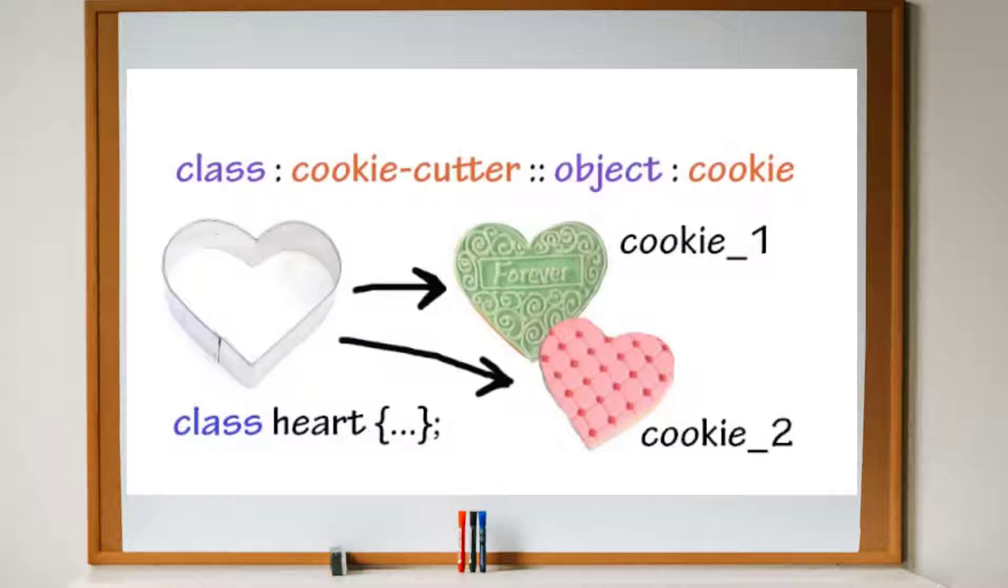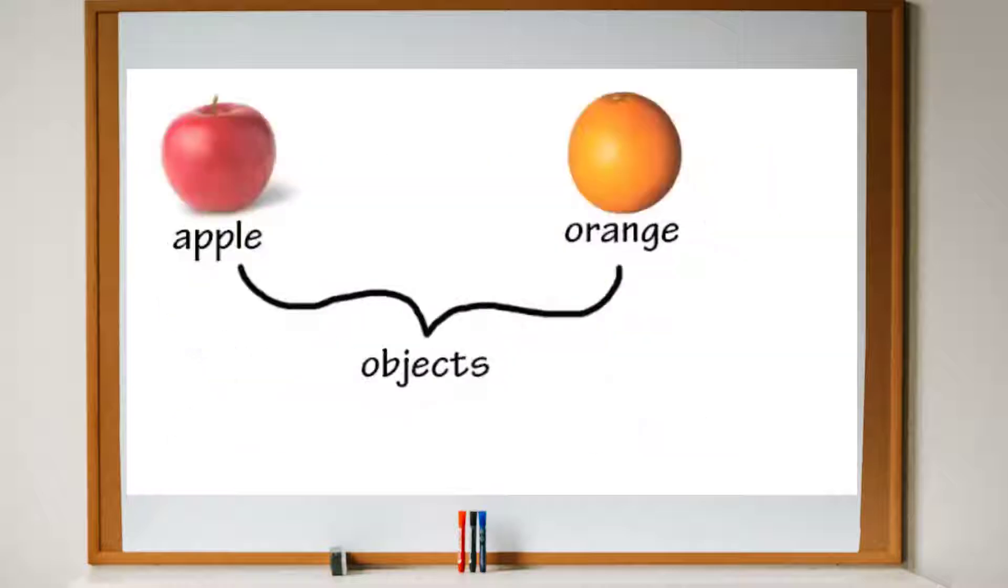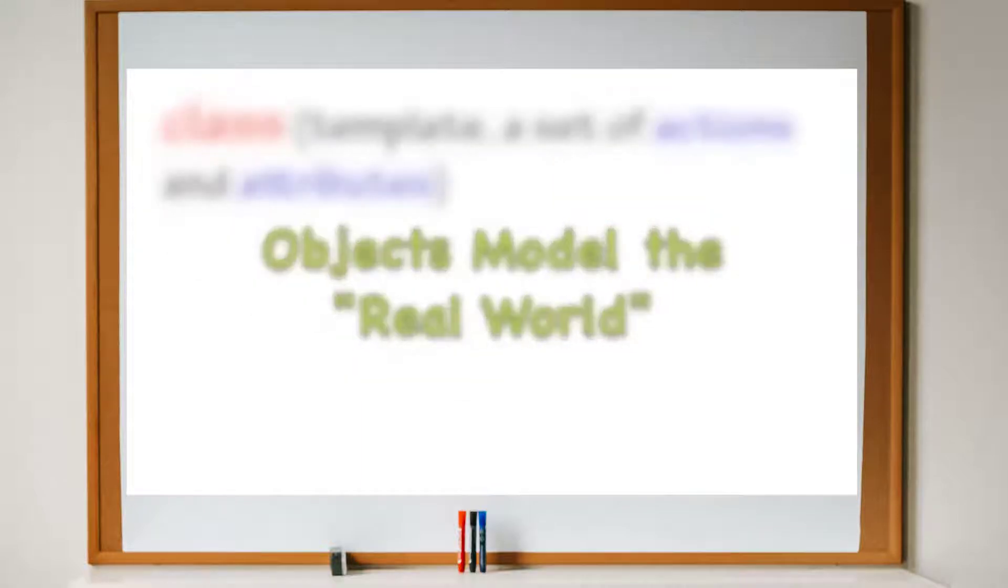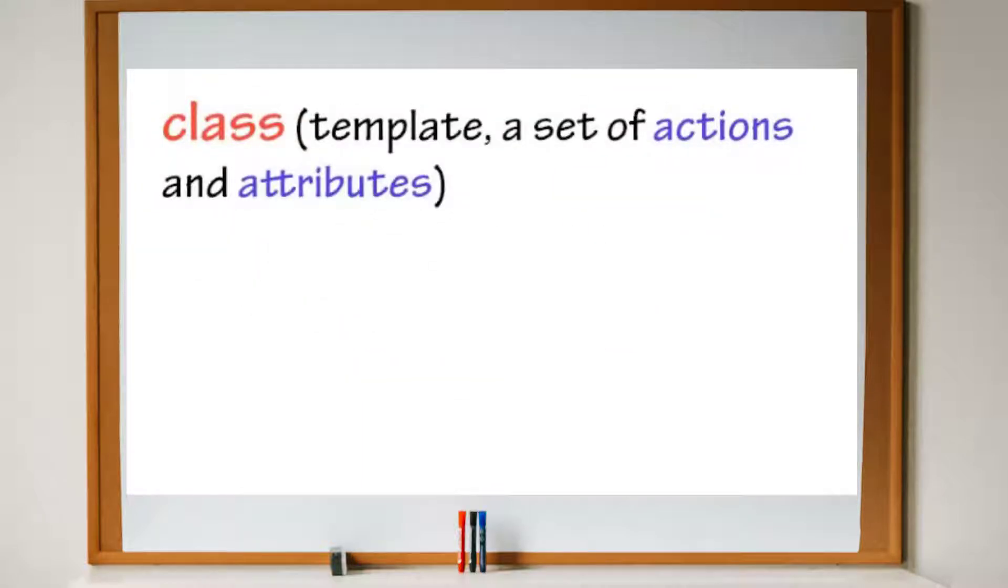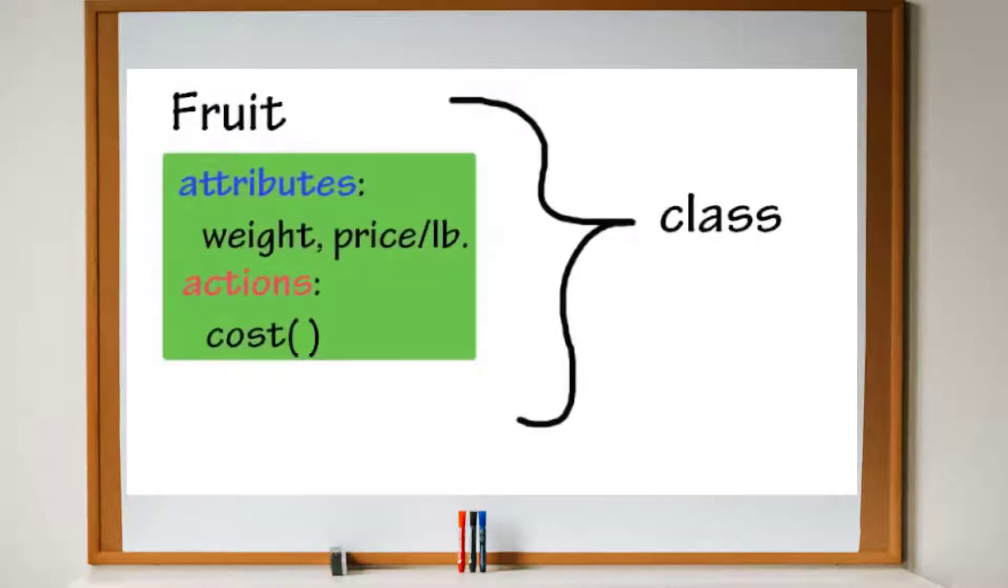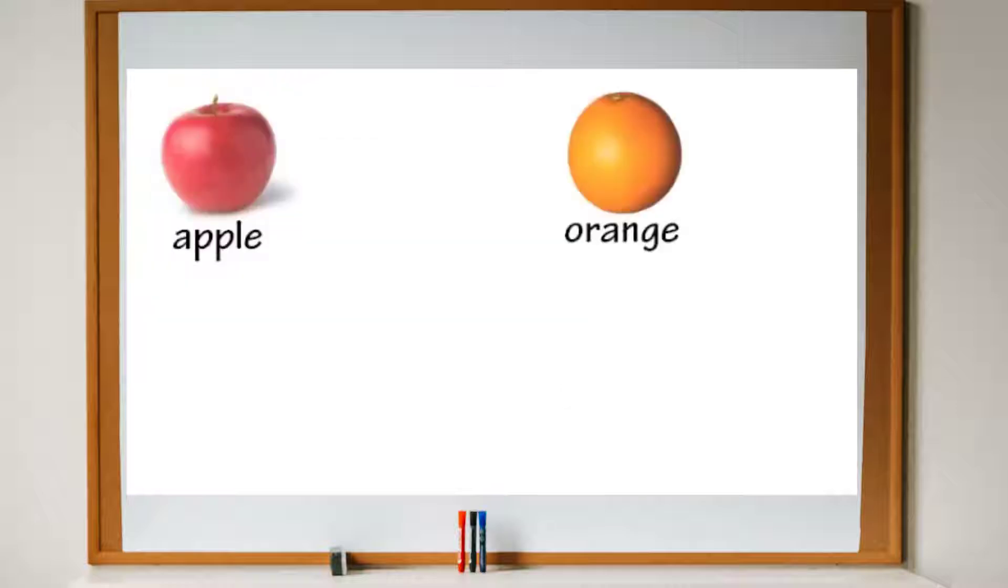There can be one class, but that class could have many instantiations. Each object has its own individual identity. A class is a template or a set of actions and attributes, and an object is an instantiation of this template. A class can be like a fruit, and an object can be a specific fruit.